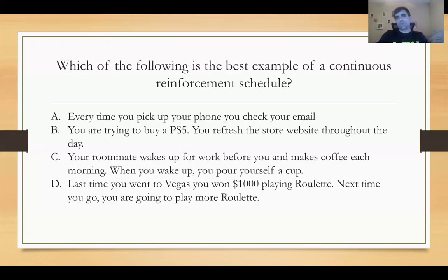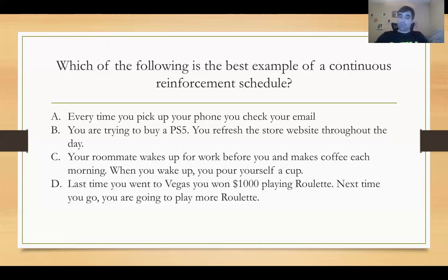D: last time you went to Vegas, you won $1,000 playing roulette. Next time you go, you're going to play more roulette. This is the opposite of continuous — you have no way to predict or know if you're going to continue winning at roulette.